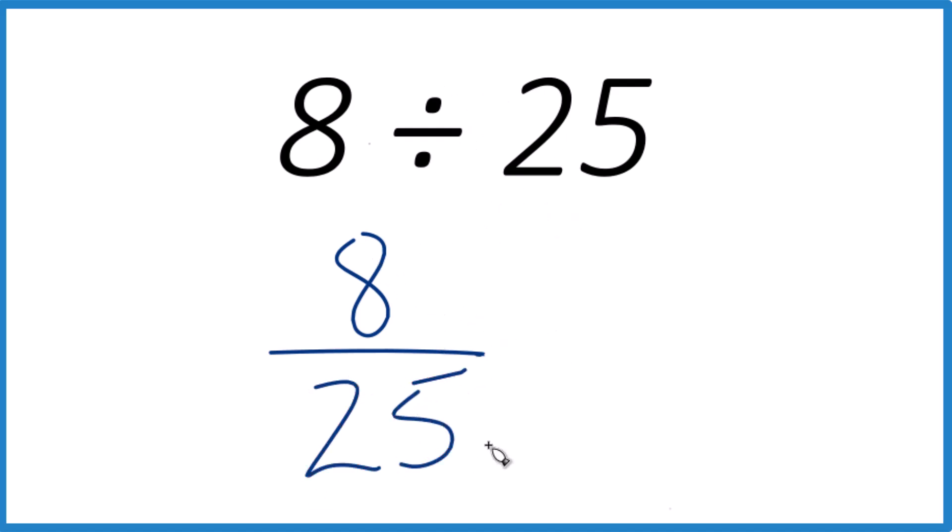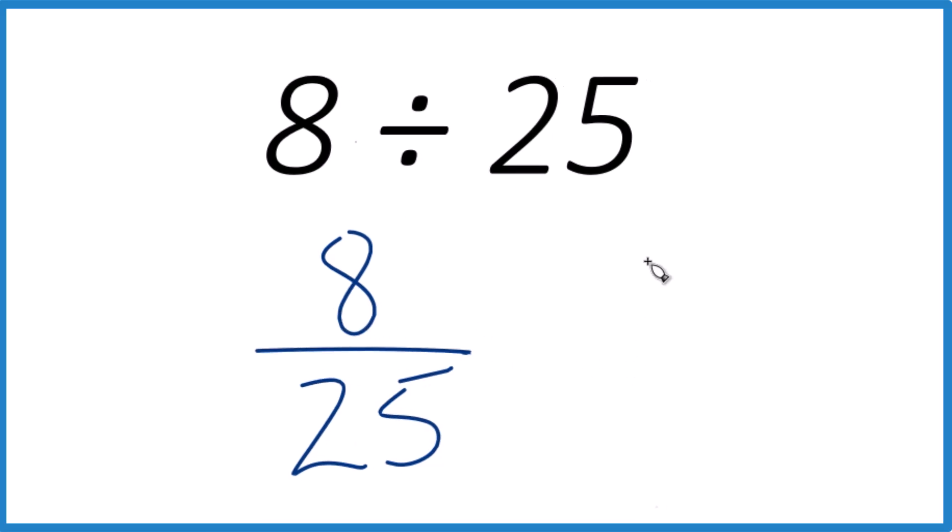Same thing, but now we can see that we're trying to see how many 25s go into 8. And since 8 is smaller than 25, we're going to have a number less than 1. We should end up with a decimal.